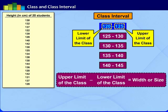The difference between the upper and lower limit is called the width or size of the class interval. In the above example, the width of the class interval is 125 minus 120 equal to 5. By increasing the class interval, we can reduce the number of classes.